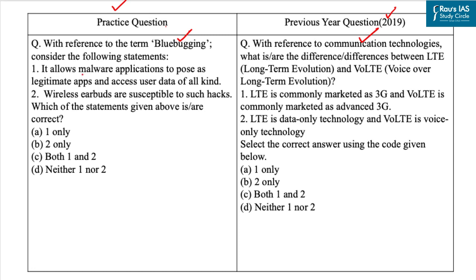The first statement is: blue bugging allows malware applications to pose as legitimate apps and access user data of all kinds. This statement is incorrect — this description is related to StrandHogg bug, in which a malicious app installed on a device can hide behind legitimate apps, and when a normal app icon is clicked, a malicious overlay is instead executed. Blue bugging is a form of hacking that lets attackers access a device through its discoverable Bluetooth connection. Once a device is blue-bugged, a hacker can listen to calls, read and send messages, and steal or modify contacts. It started as a threat for laptops with Bluetooth capability, and later hackers extended the technique to mobile phones and other devices.